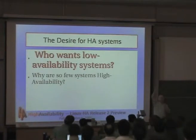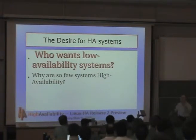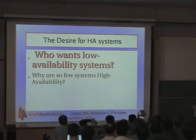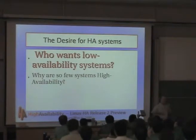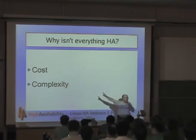How many people in the audience want low availability? This is the first time I've had two people raise their hands — congratulations. Now, how many of you have all the availability you want in systems you already have? So the interesting, useful question is: why aren't systems highly available? If everybody wants it and everybody doesn't have it, why not? There are two answers: one is cost, and the other is complexity.